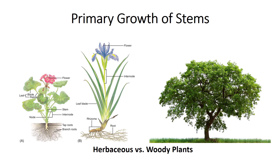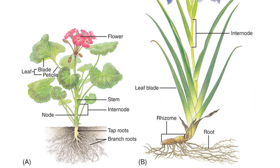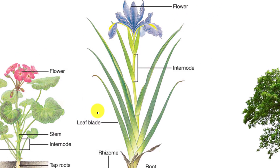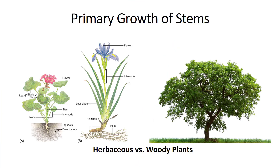Have you heard of an herb and just thought it was something you put in your food to add flavor? There are two types of plant bodies: the primary plant body is herbaceous while the secondary plant body is woody. Both this geranium and iris are considered herbs since they do not produce wood or bark. Annual plants, plants that only live one year, are always herbaceous.